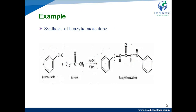An example of Claisen-Schmidt condensation is the synthesis of benzylidene acetone. In this, two molecules of benzaldehyde react with acetone in the presence of sodium hydroxide and ethanol to form benzylidene acetone. Here benzaldehyde is an example of an aromatic carbonyl compound lacking alpha hydrogen — there is no hydrogen on the alpha carbon adjacent to the CHO group — and it reacts with acetone in the presence of base sodium hydroxide to produce benzylidene acetone.